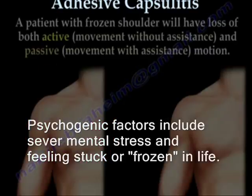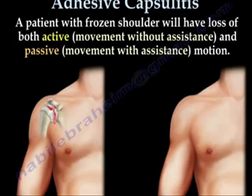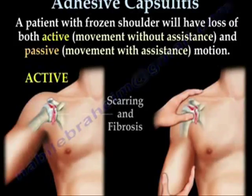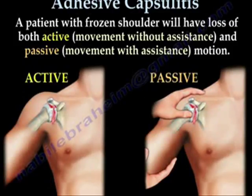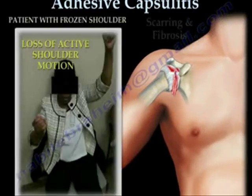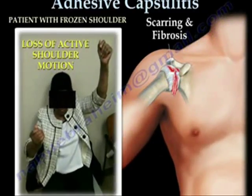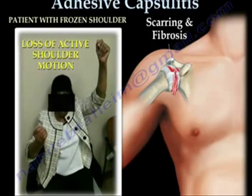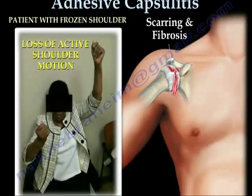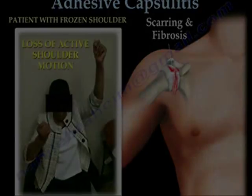A patient with a frozen shoulder will have loss of both active and passive motion. With the scarring and fibrosis, the patient will have a frozen shoulder and lose the active shoulder motion. Lucy has given permission to use this video. Let's raise the right arm up first, all the way. That's it — without bending your body at all.